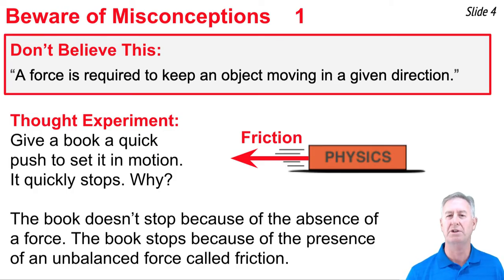The reason the book comes to a stop is not because of the absence of a continued force, but because of the presence of a force, a force that we call friction. The book stops because of the presence of an unbalanced force, not because of the absence of one. So we're going to talk a little bit about friction and why it causes the book to stop.